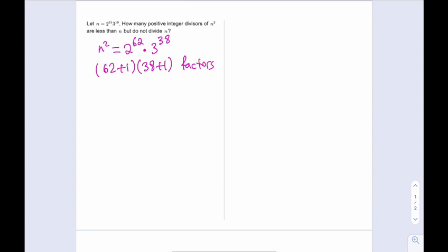So, if you calculate that number, 63 multiplied by 39. And we have to subtract 1 from this number, of course, to exclude the n. And divide by 2, that's going to give us 1,228 factors of n.